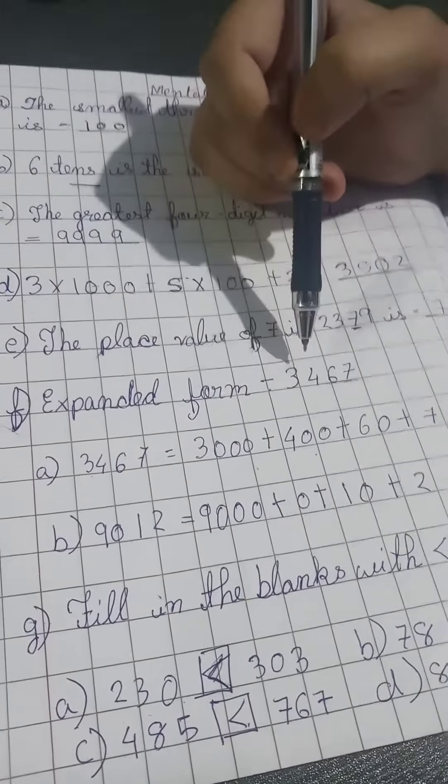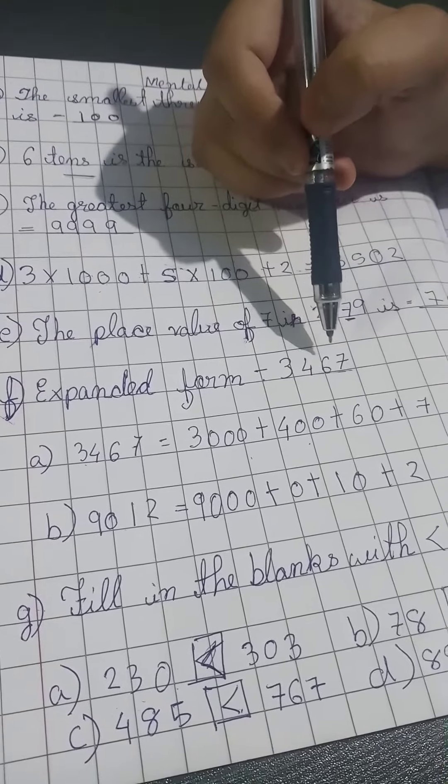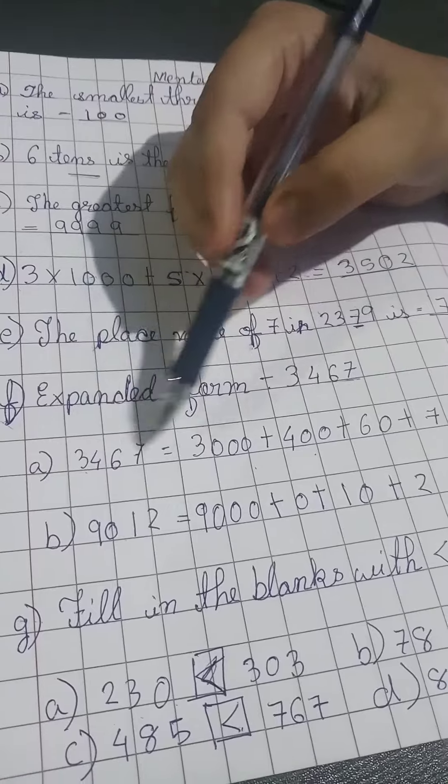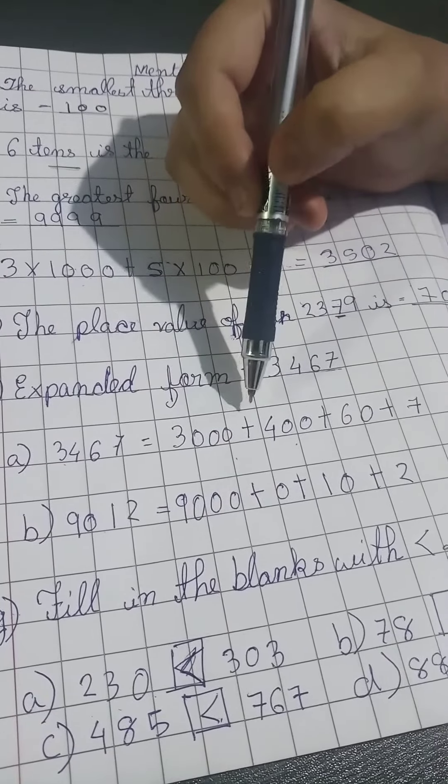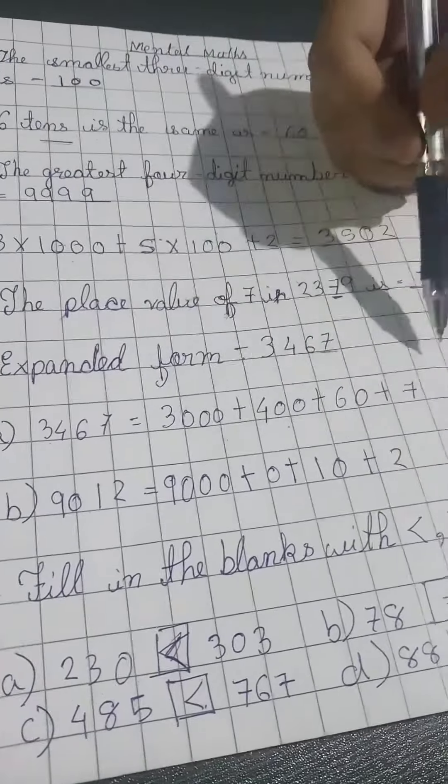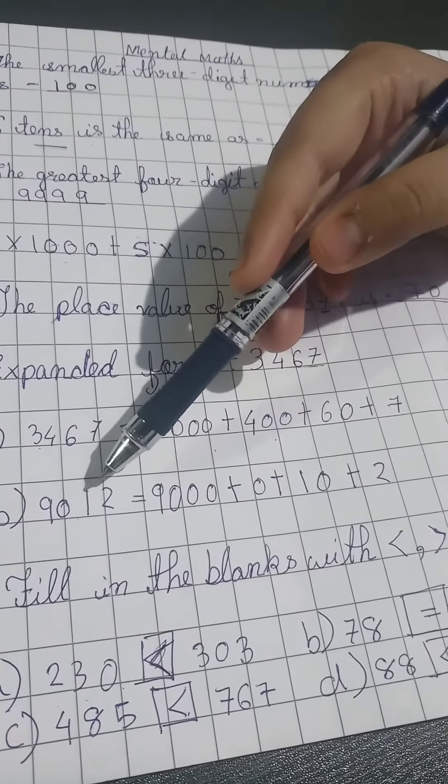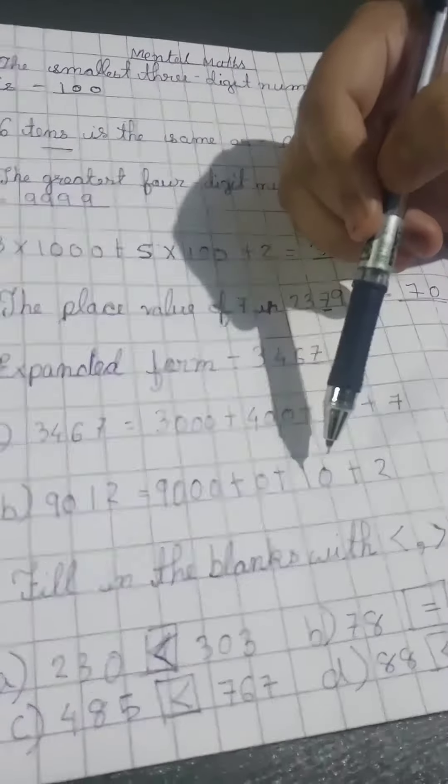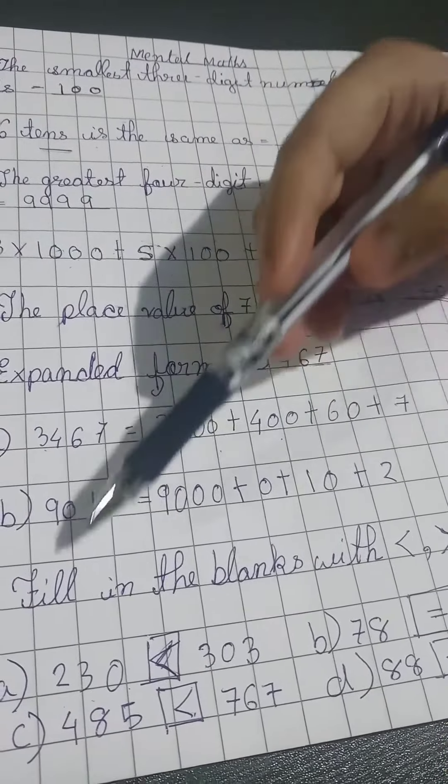Expanded form of 3467 is 3000 plus 400 plus 60 plus 7. 9000 plus 0 plus 10 plus 2, fill in the blanks.